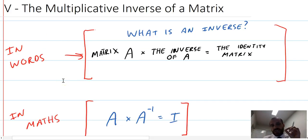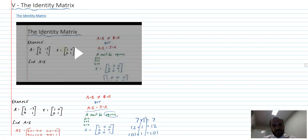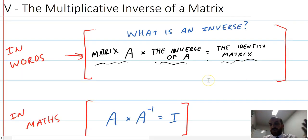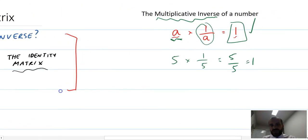The multiplicative inverse means a number, a thing, that I can multiply the original by so that the answer is equal to 1. That's what a multiplicative inverse is. So now let's look at the multiplicative inverse of a matrix. In words, I can say that matrix A, so some matrix, times the inverse of that matrix will equal the identity matrix.